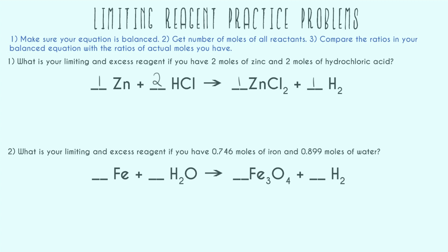Step two: get the number of moles of all reactants. We've just been told — we have two moles of zinc and two moles of HCl. Now we have to compare the ratios in your balanced equation with the ratios of actual moles you have.